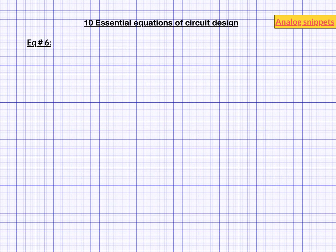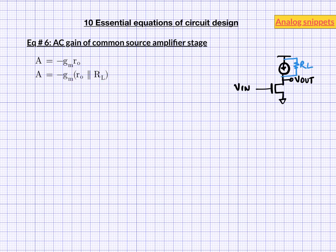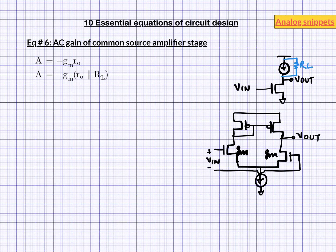AC gain of common source amplifier stage is equation number 6. With ideal current source as load stage the small signal AC gain of this stage is given by minus GM RO. Where GM is the transconductance and RO is the small signal output impedance of MOSFET transistor. If the current source has a finite resistance RL then this equation is modified as follows. Here this term indicates RO in parallel with RL. Gain of a differential amplifier is also given by a similar equation. But there is no negative sign in this case. In general gain of a gain stage is given by some effective GM multiplied by some effective load resistance.